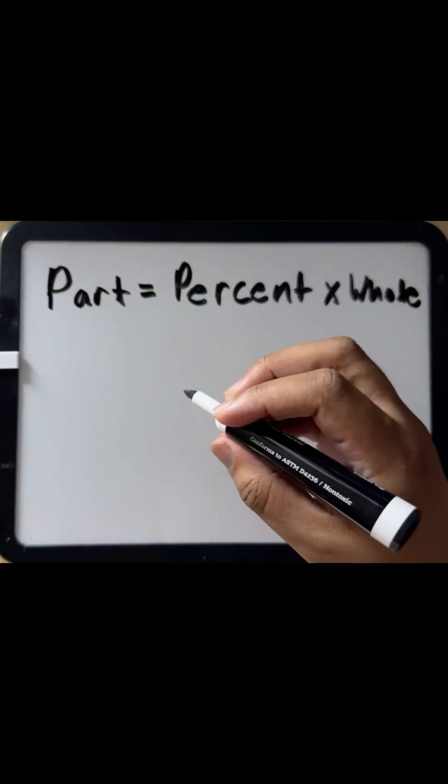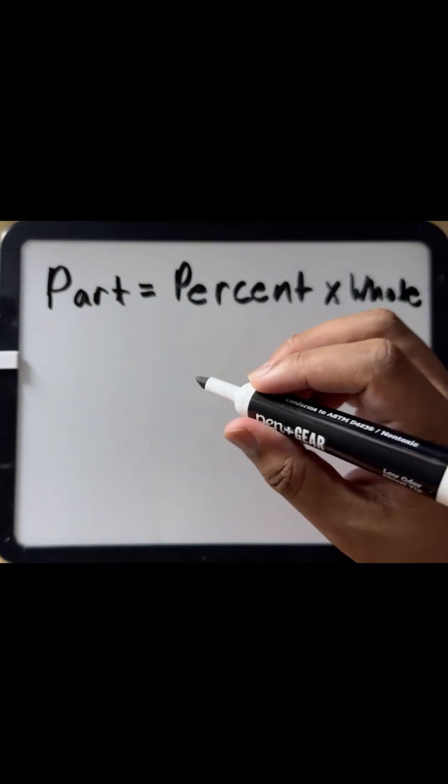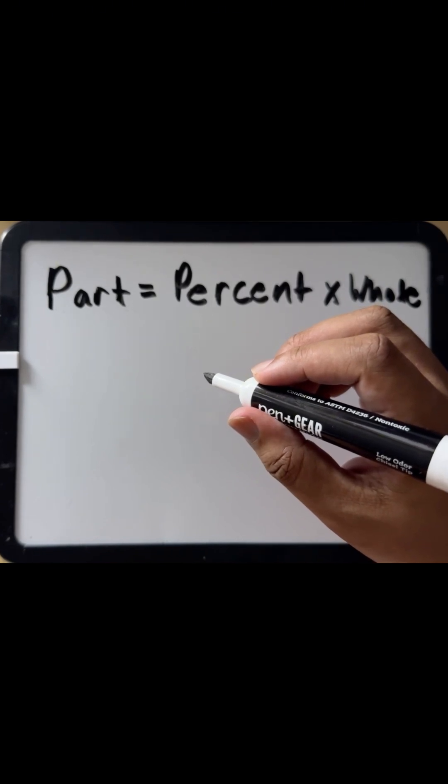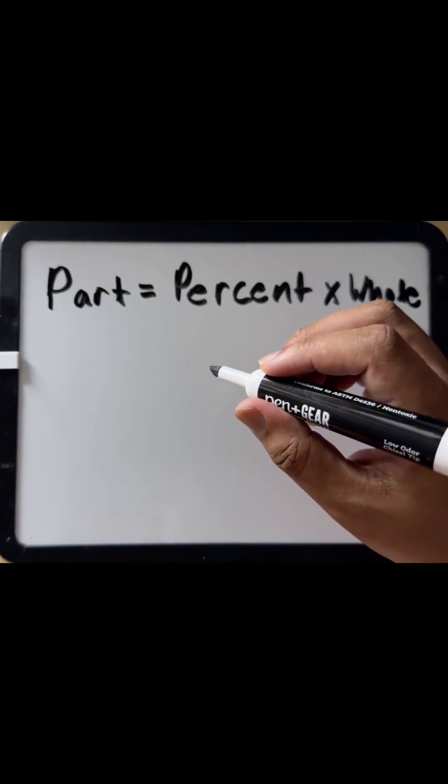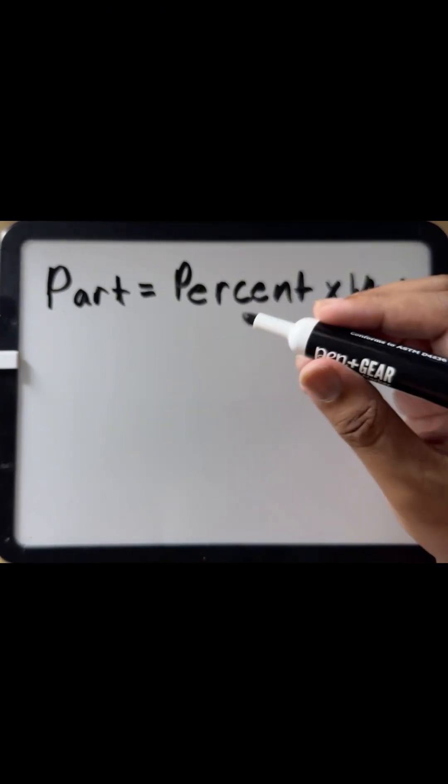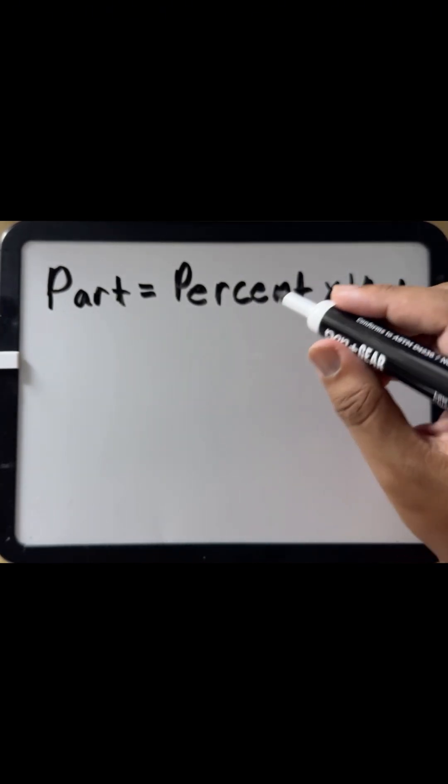Let's do a practice problem. A jacket originally cost $80, but it's on sale for 25% off. What is the discount amount and what is the final price of the jacket? Nice and easy problem to demonstrate how to use our percent formula here. Part equals percent times whole.